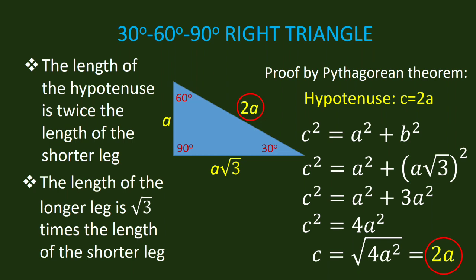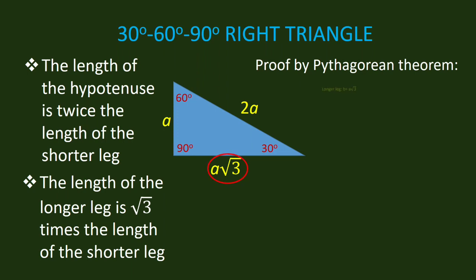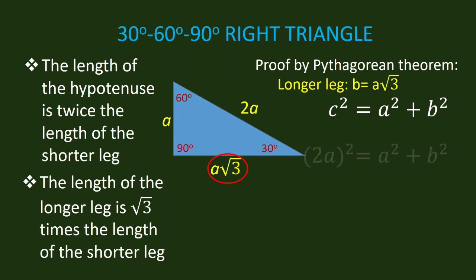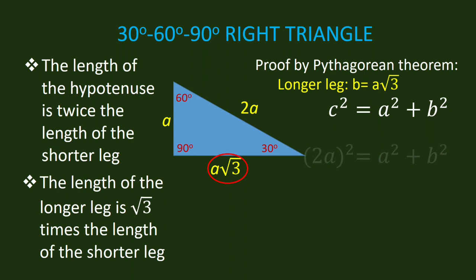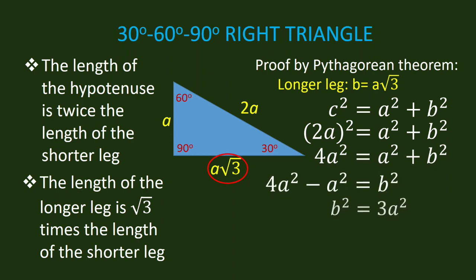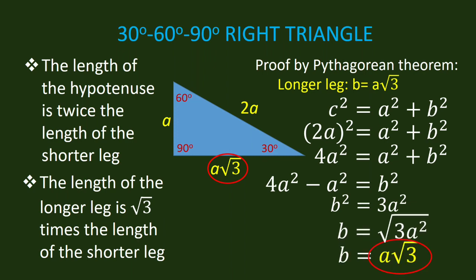We also want to prove that the longer leg is equal to the shorter leg times square root of 3, or A square root of 3. We will use the Pythagorean theorem and substitute the given values. We use the information of A and C, where C equals 2A, and we want to find B. Simplifying, we have B is equal to A square root of 3. We have proved that the longer leg is A square root of 3.